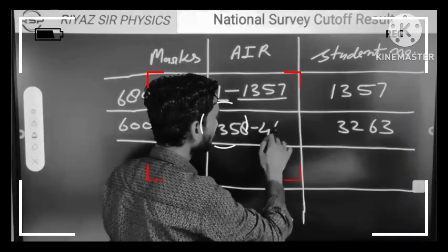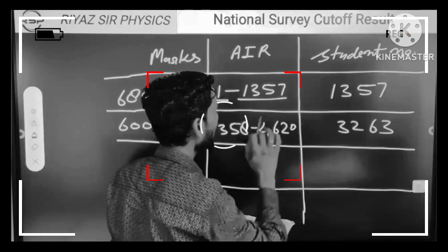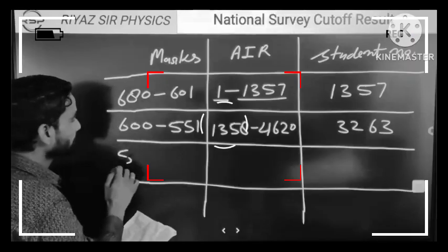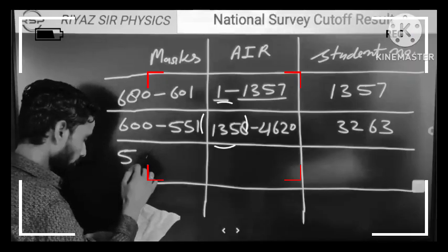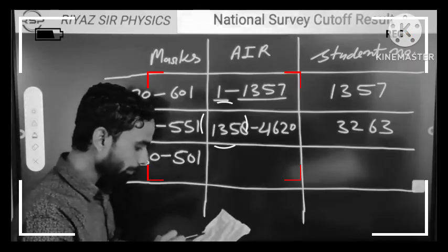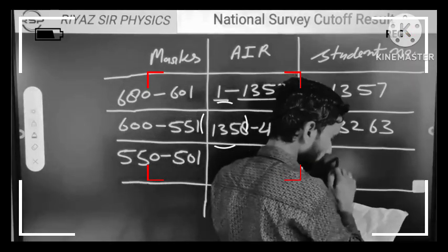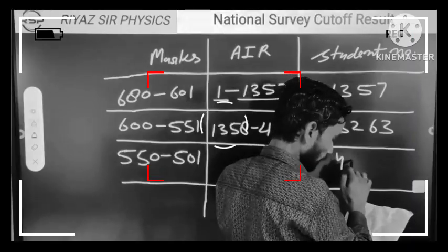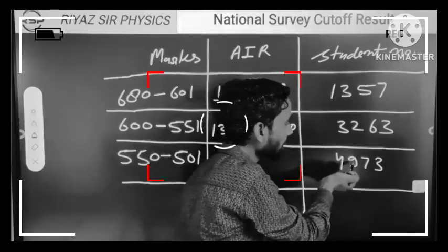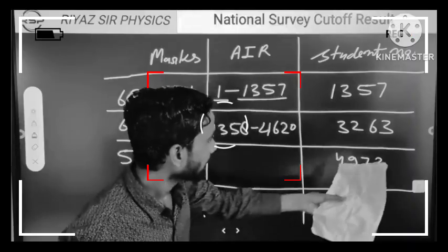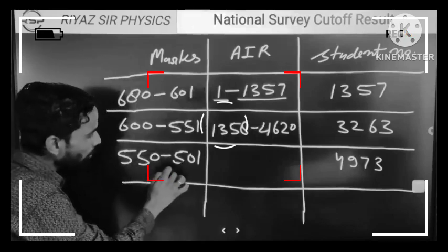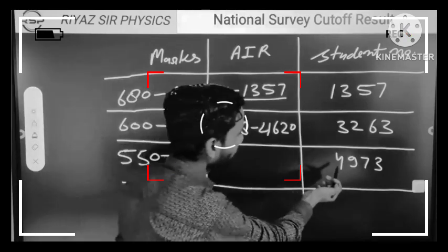Next, we have taken 550 to 501 marks. The students we have got here are 4973. This means we have got 4973 students from 550 to 501 marks.